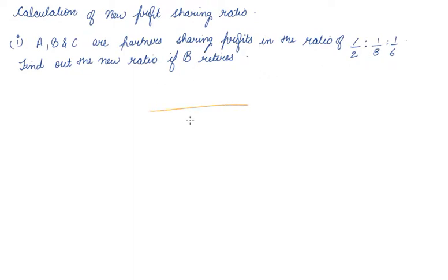So let's first of all take the LCM: 3:2:1. This is the profit sharing ratio between A, B, and C, that is 3:2:1. Now find out the new ratio if B retires. If B retires, the new ratio simply will be, if nothing is given, eliminate 2. So 3:1 will be the new ratio of A and C.